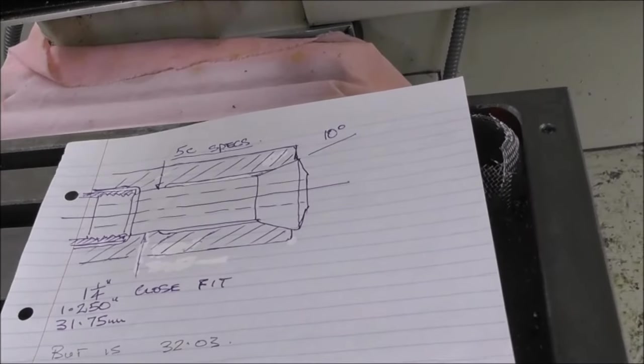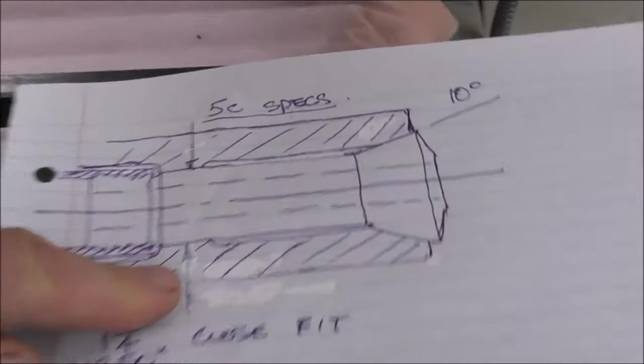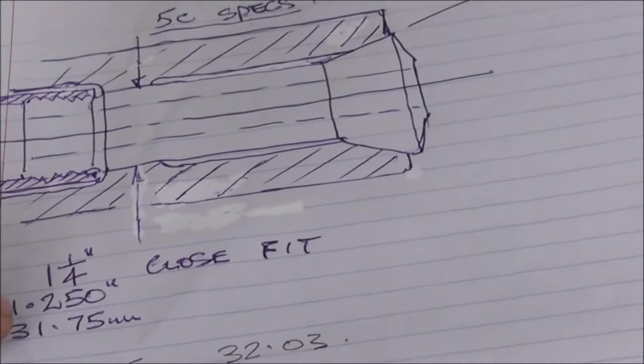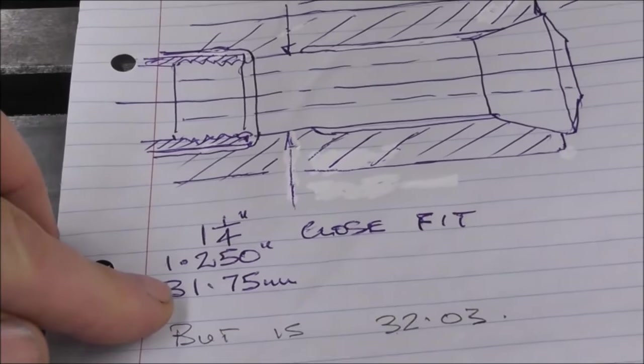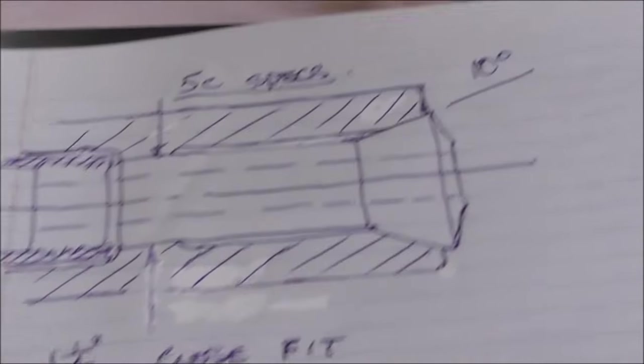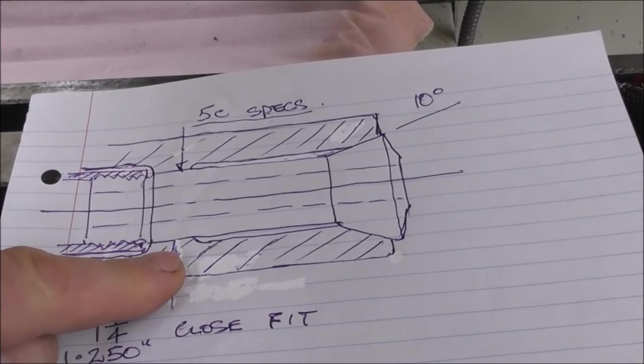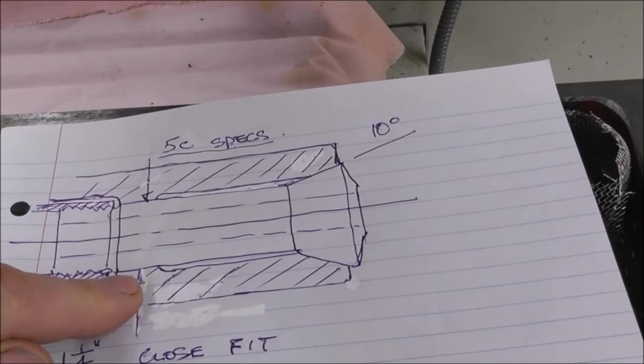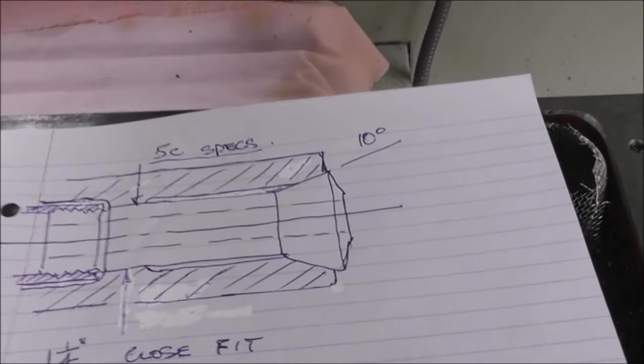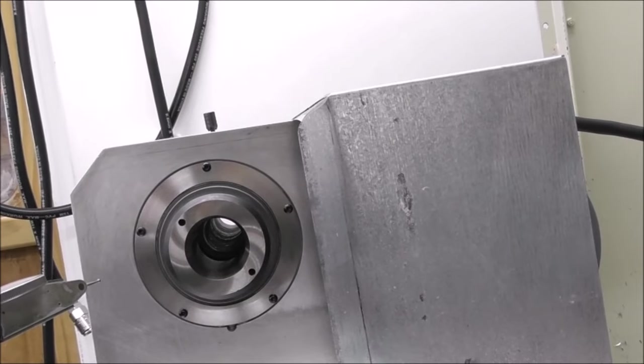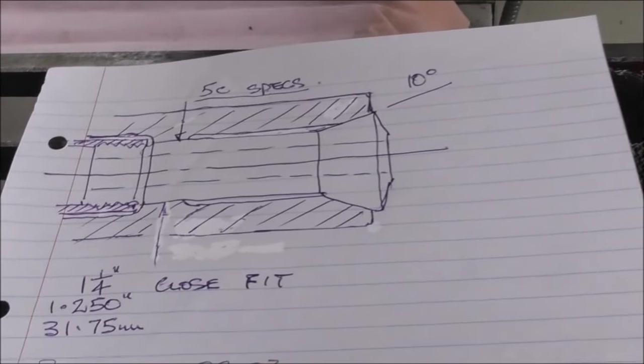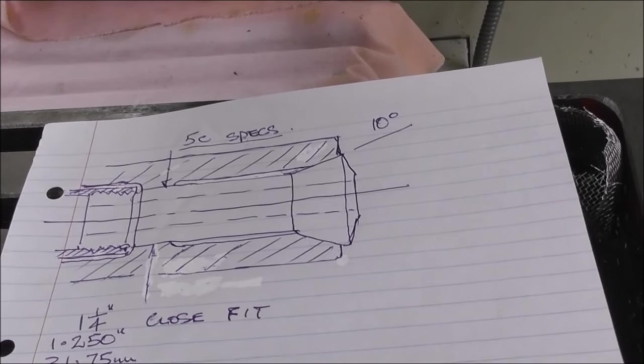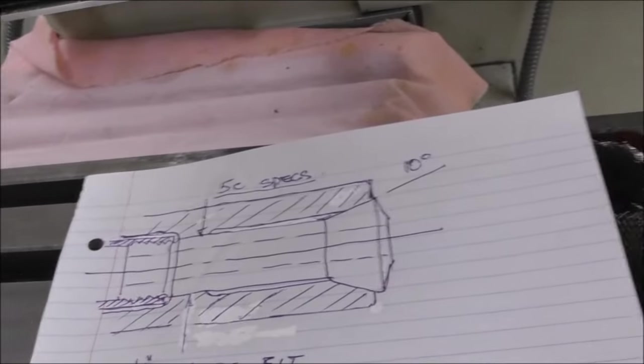A 5C spindle bore should be a close fit on a 5C collet in this area. The 5C collet is inch and a quarter OD, and the spindle bore should be a close fit on that in this zone. There should be clearance in this section and then a close fit on the 5C collet of inch and a quarter or 31.75mm in this area. But on my spindle bore it's just ground straight through - clearance at 32.03mm. So it's 0.3 of a millimeter, nearly 11 or 12 thou clearance on the collet, which is really bad news.